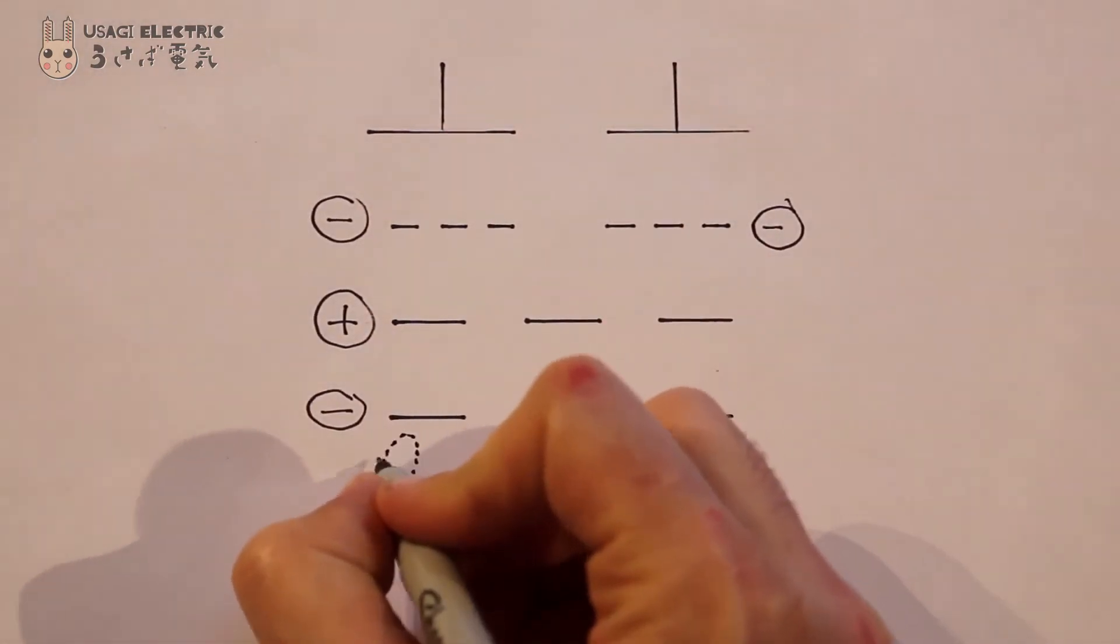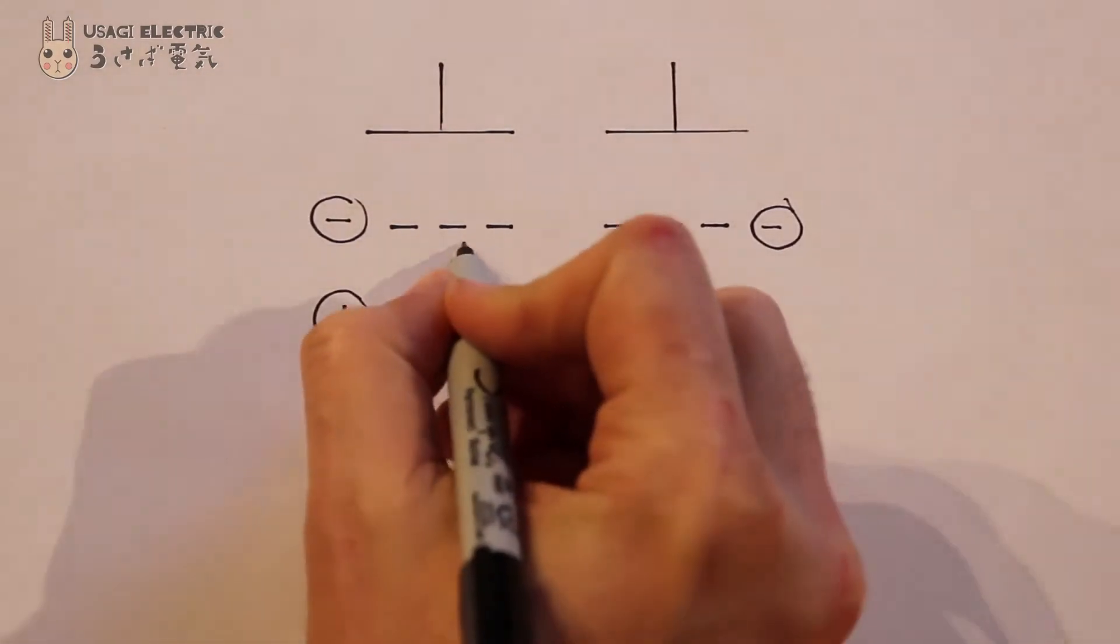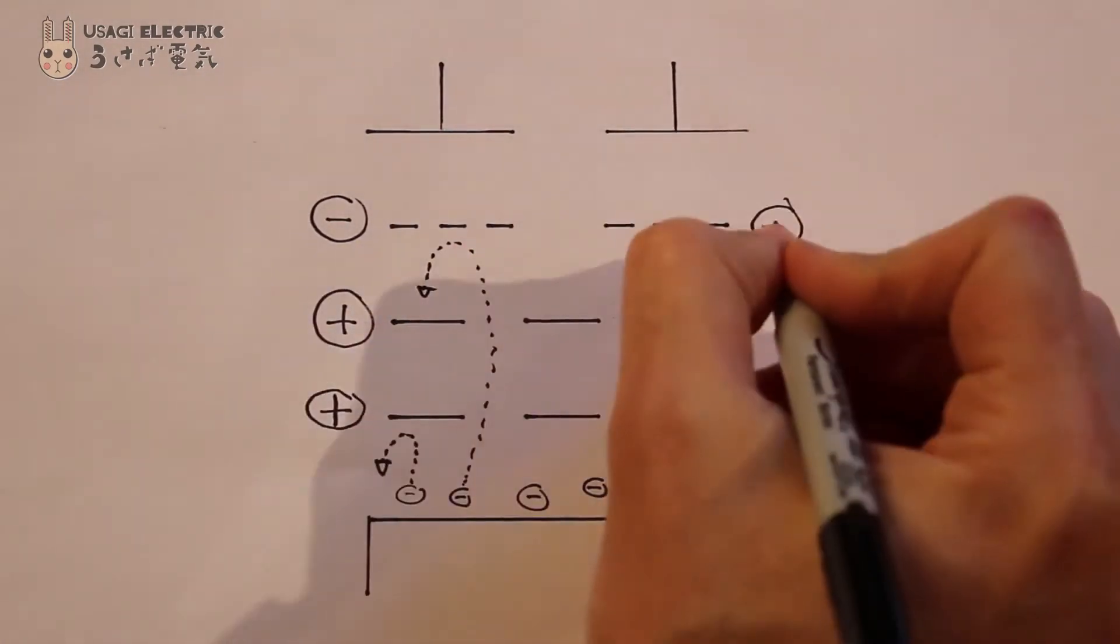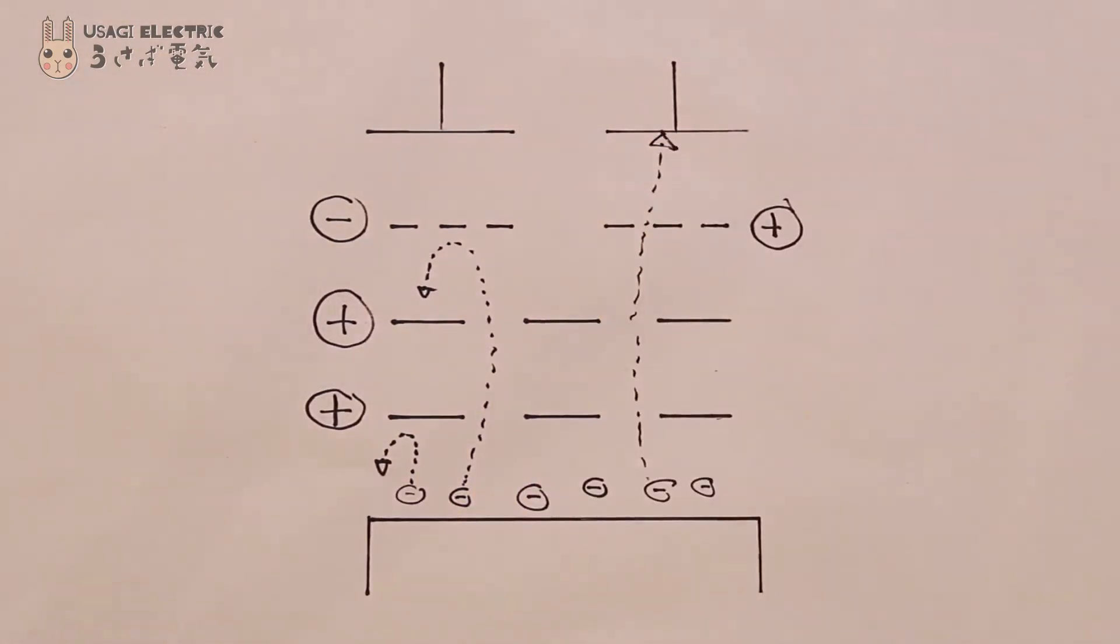The result is a tube that mixes three inputs to give two outputs. In order for electrons to flow from the cathode to one of the plates, the bottom control grid and the appropriate top control grid must both go high.